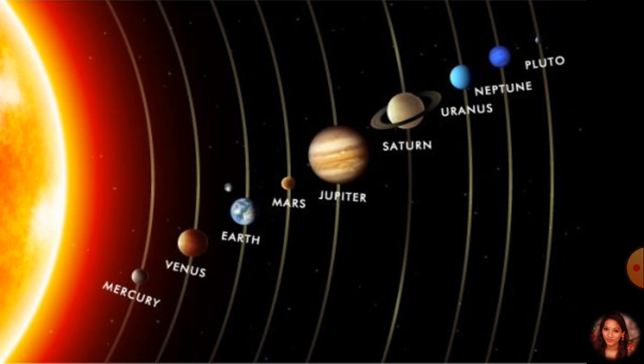So we learned about the variety of planets in sequence starting from the Sun: first Mercury, then Venus, then Earth, Mars, the largest Jupiter, beautiful Saturn, Uranus, and Neptune.